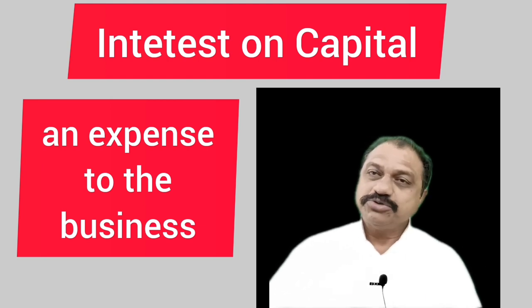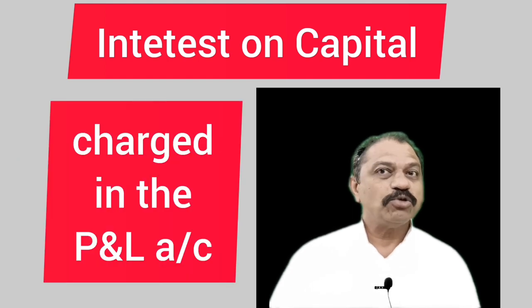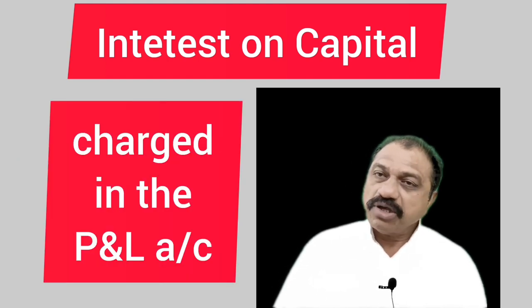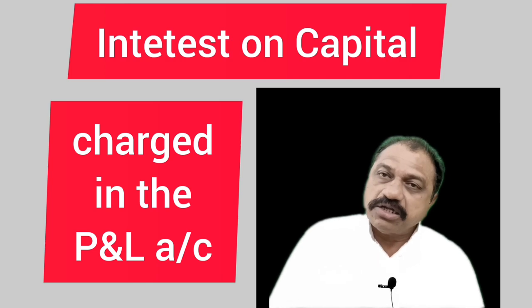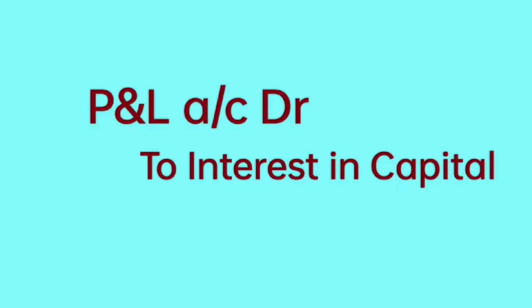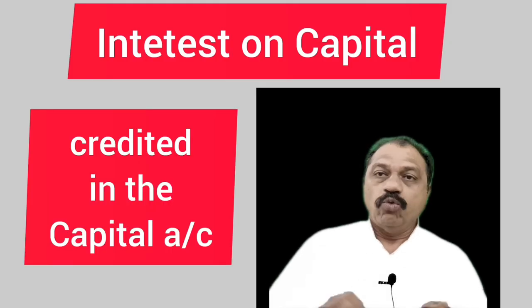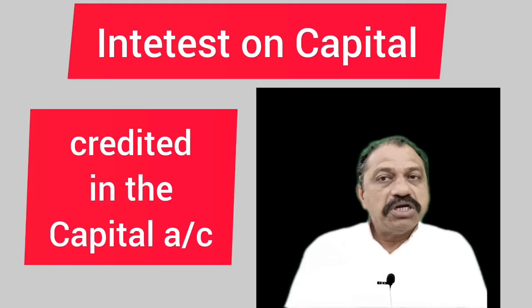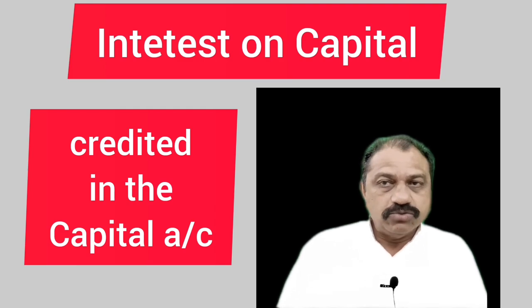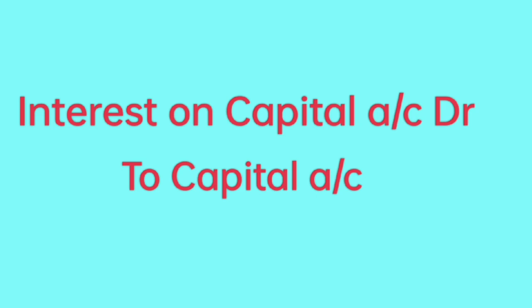There are two adjusting entries for interest on owned capital. When interest on owned capital is charged in the profit and loss account, the journal entry is: Profit and Loss Account Dr. to Interest on Owned Capital. When interest on owned capital is credited in the capital account, the journal entry is: Interest on Owned Capital Account Dr. to Capital Account.